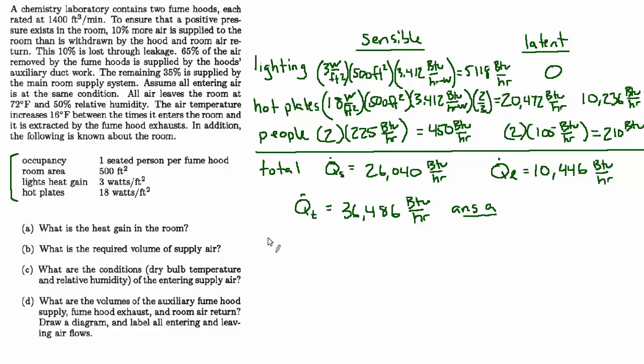So we'll just use our usual rule of thumb: Q̇_sensible = 1.08 × CFM × ΔT. And if we solve that for the volume, CFM = 26,000 divided by 1.08. And the ΔT—they said the air temperature increases 16 degrees between when it enters the room and when it's extracted—so that is the ΔT.